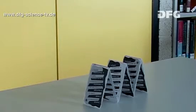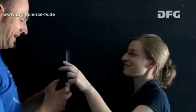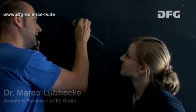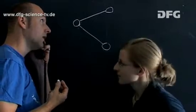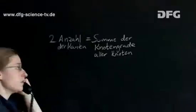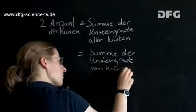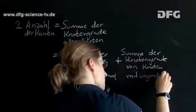We built up one argument on another, just like a house of cards. We already know that each edge contributes precisely one to the degree of each node it ends at. That means that each edge contributes a total of two. Twice the number of edges is equal to the sum total of the node degrees of all the nodes. Now we can divide the sum total into two sums: firstly the sum total of those with an even node degree, and separately, the sum total of those with an odd node degree.